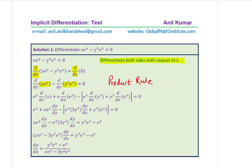So from differentiation we get e^y plus, and here we apply the chain rule. Whenever you differentiate implicitly, the chain rule will be applied. So we get x·e^y·(dy/dx). The derivative of y³ is 3y²·(dy/dx) by the chain rule. And differentiating e^x with respect to x gives e^x.